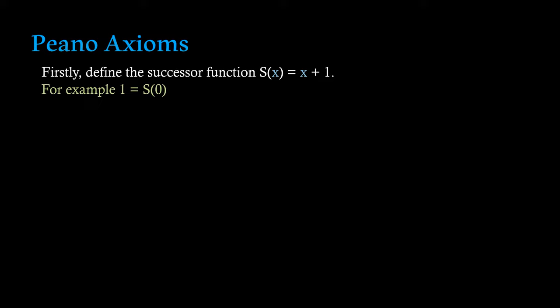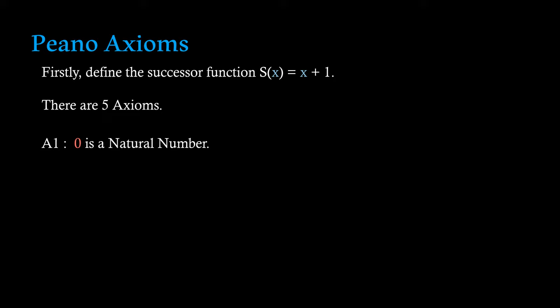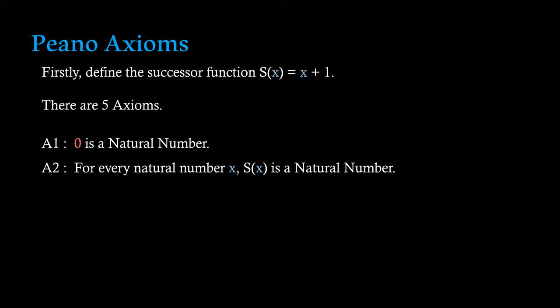So let's talk about these axioms. There are five of them. The first being that zero is a natural number — you might think this is quite trivial, but we need to define this. The second states that for every natural number x, the successor of x is also a natural number. This allows for basic counting to be established, as we can start counting from zero all the way up to infinity.